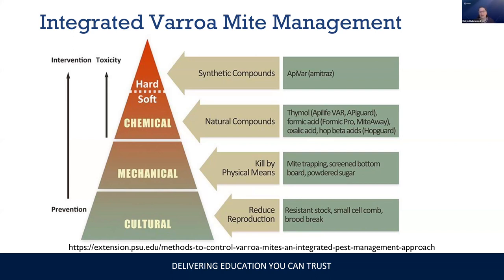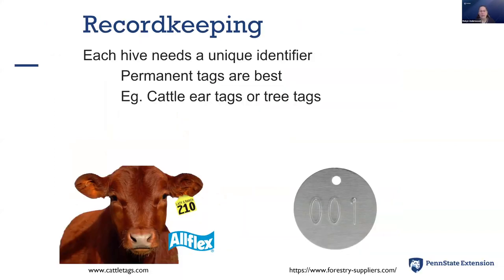The number one thing to do at the base of the pyramid is to use resistant stock. When you're doing IPM, you need to pay attention to what you're doing, keep records of what you've done in the past, and track what the mite levels have been over time. Being data-driven, you'll need to collect data, so you need a method of record-keeping. Every hive has to have a unique identifier. You can name them after your favorite actresses, or simply give them a number. I use cattle ear tags — little flexible pre-numbered things you nail to the hive.